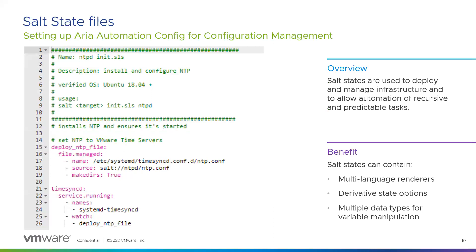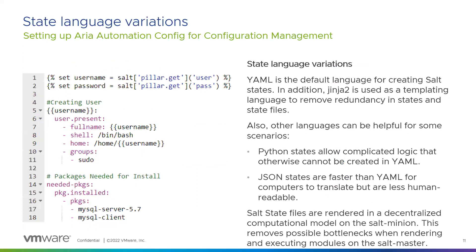Here's an example of a repetitive task: setting the time server for a host. Having a state file created to copy an NTP config file to the target and ensure the time sync daemon is started at any stage of the machine lifecycle allows you to focus on more pressing challenges. This is an example of a state you might include in your top state file to ensure that even if a machine is re-imaged, it always has NTP configured the way your organization needs.